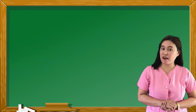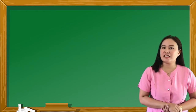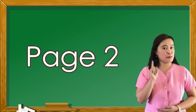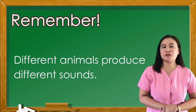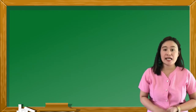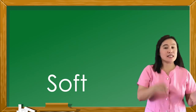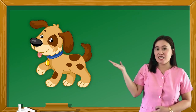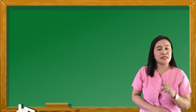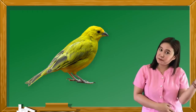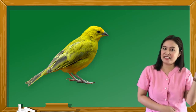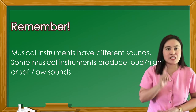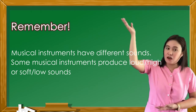Did you get the perfect score? That's great, kids! Now, we're done answering our pre-test. This time, open your module to page 2. Remember, different animals produce different sounds. It could be loud or soft. An example of an animal that has a loud sound is... dog! Next, an example of an animal that has a soft sound is... That's great! Also, musical instruments have different sounds.